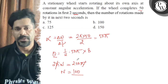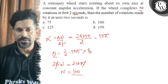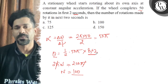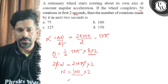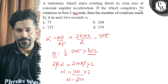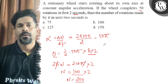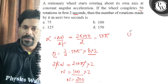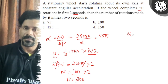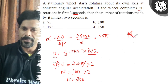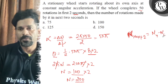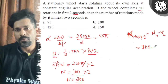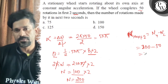So at 4 seconds, t squared is 16. Time is 4 seconds, so n is equal to 200 total rotations. The rotations in the next 2 seconds is 200 minus 50, so the right answer to this question is 150.